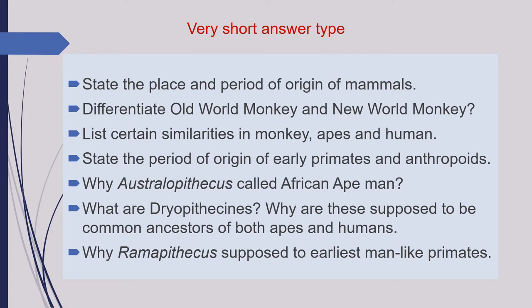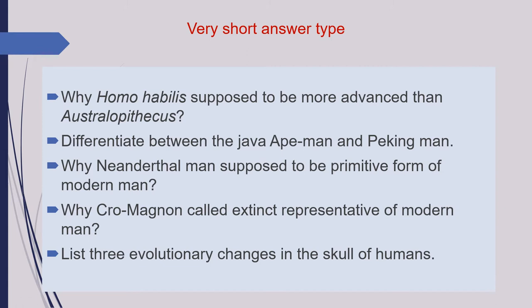Next is: what are dryopithecines, and why are these supposed to be common ancestors of both apes and humans? Next is: why is Ramapithecus supposed to be the earliest man-like primate? Next is: why is Homo habilis supposed to be more advanced than Australopithecus? Next is: differentiate between the Java ape man and Peking man. Next is: why is Neanderthal man supposed to be a primitive form of modern man? Next is: why is Cro-Magnon called an extinct representative of modern man?